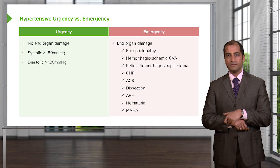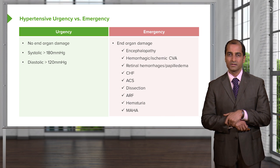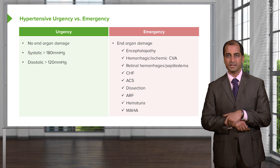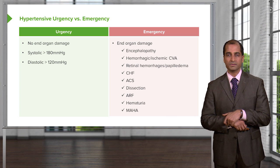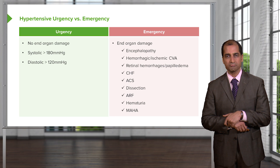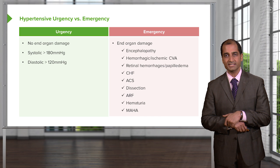The heart gets damaged — what's that called? Congestive heart failure, CHF. So what do you want to provide? Advanced cardiac support, ACS. What's going on? An organ is being damaged. What kind of hypertension? Emergency. Urgency? No. In urgency, the hypertension is high but the organs remain pretty much intact.